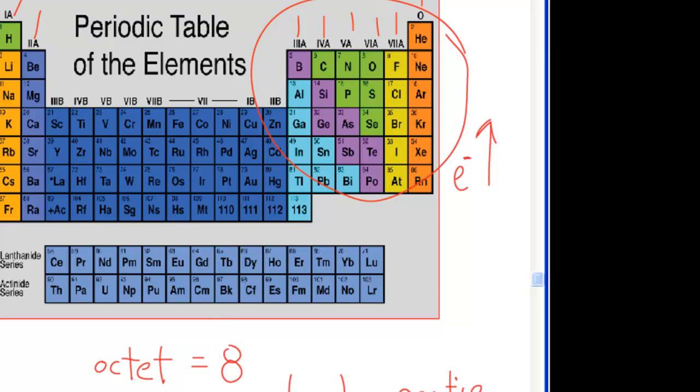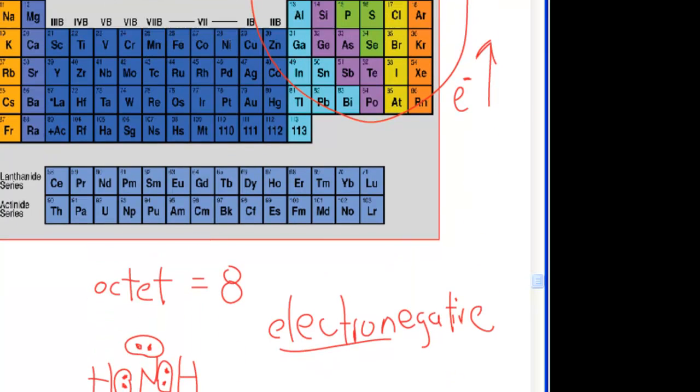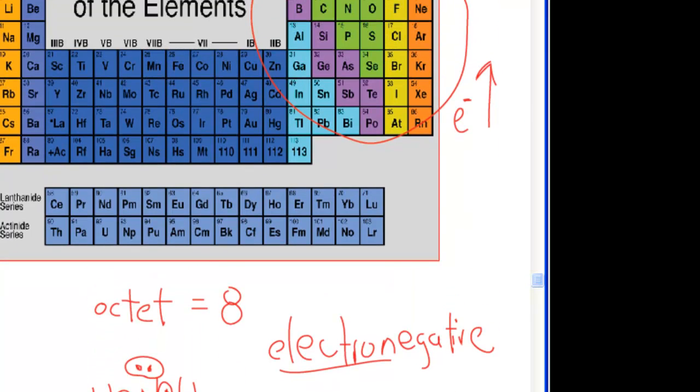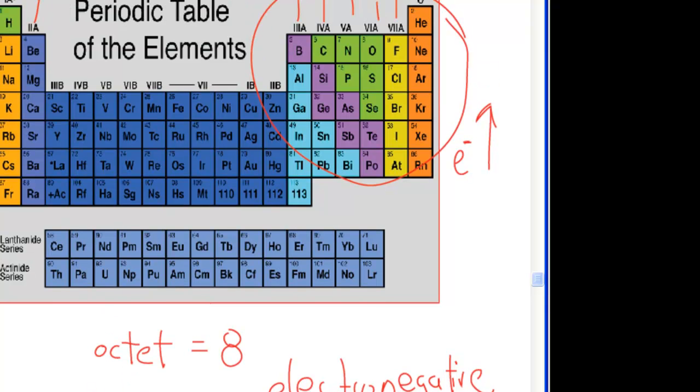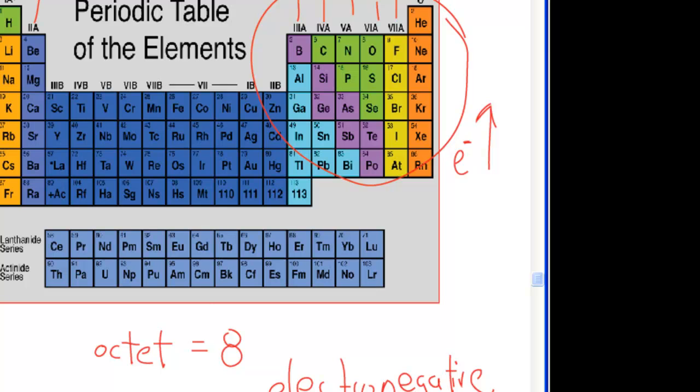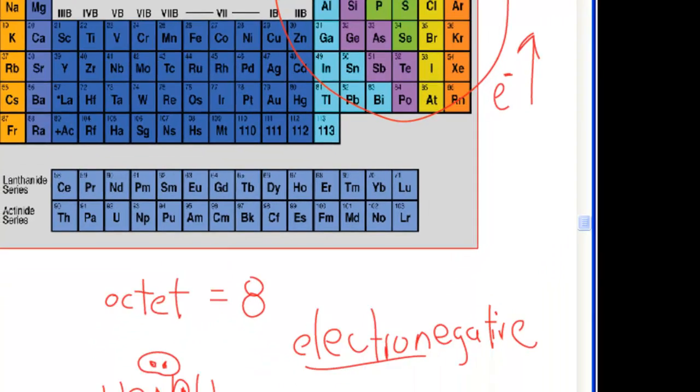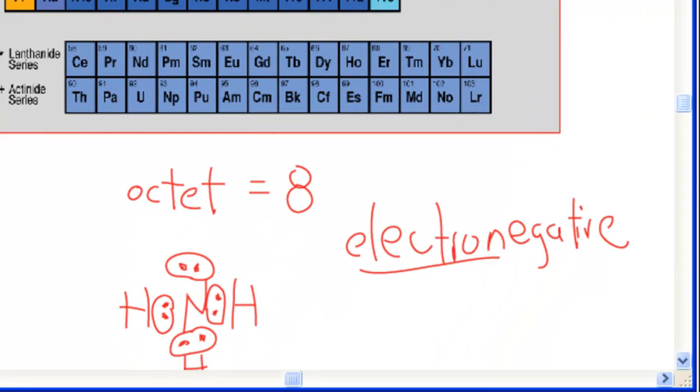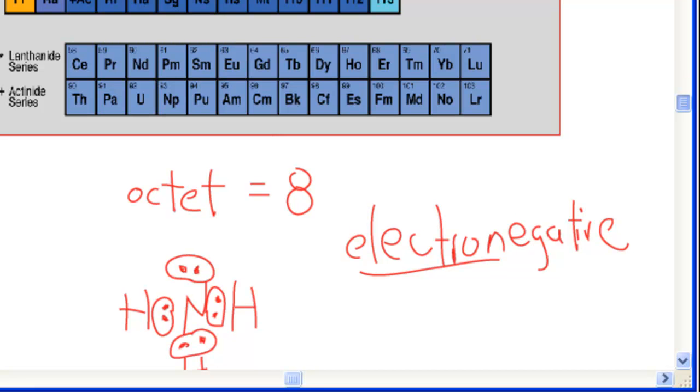And so all these are going to be more electronegative. Electronegativity is just a measure of electron density. So since nitrogen is more electronegative than hydrogen, hydrogen's electrons are going to be drawn to nitrogen. And you can think of nitrogen as a bully, right? It's going to want to gang up on three hydrogens for each of their electrons because it wants to make eight.